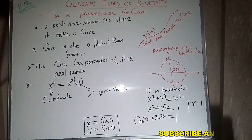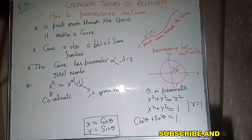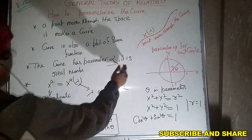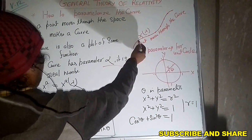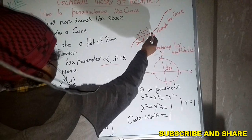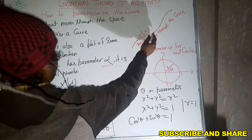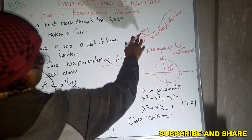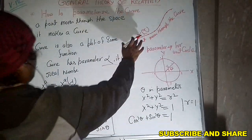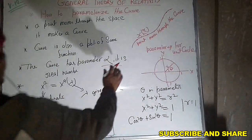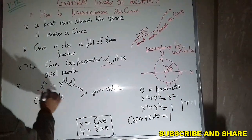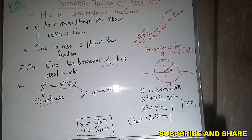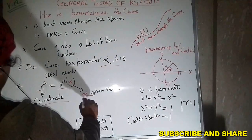This curve is also a plot of some function, and that function is called the parameter alpha. If this is the curve and a point is following this curve path, then x-alpha is called the curved path or coordinate, where alpha is the parameter and alpha is a real number. So x^a is equal to x^a(alpha), where x^a is the coordinate and alpha is the given value.